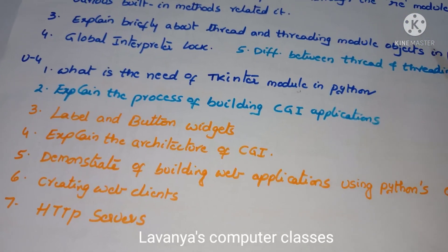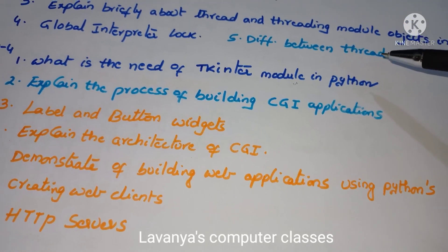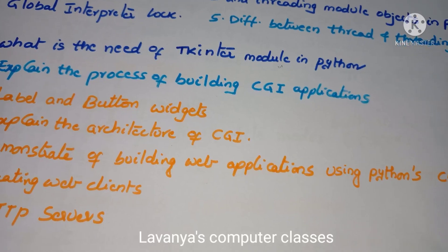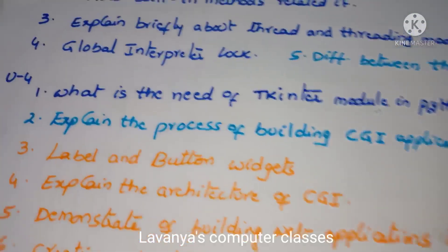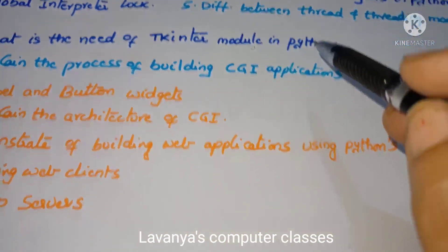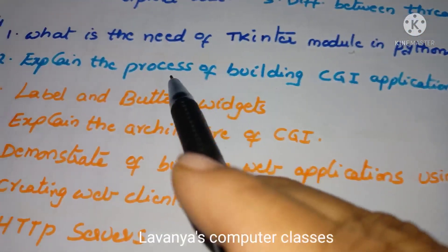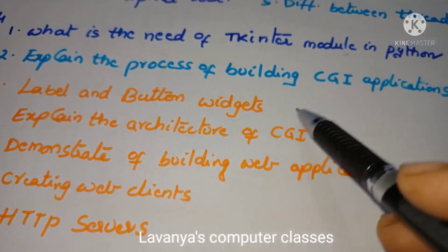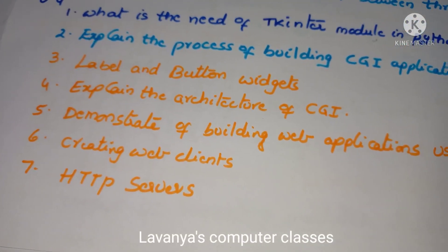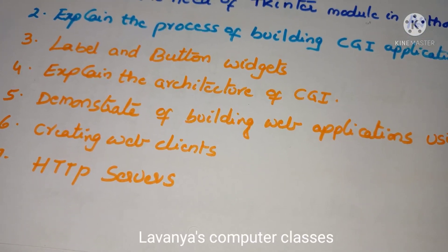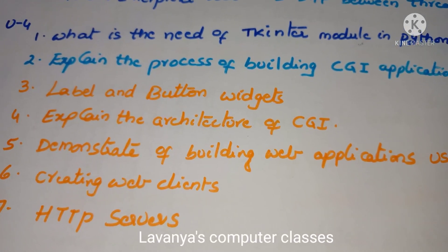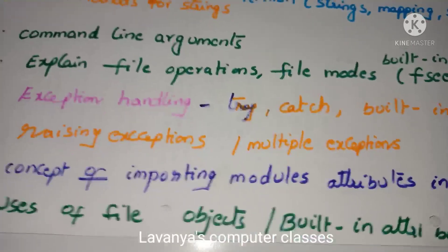In Unit 4, the Tkinter module is a very important question. Also important is the process of building CGI applications. Unit 4 has two chapters: GUI programming and web programming. In GUI programming, cover Tkinter module topics. In web programming, cover labels and button widgets, explain the architecture of CGI, demonstrate building web applications using Python's CGI module, creating web clients, HTTP servers, advanced CGI, helper servers, and client concepts.